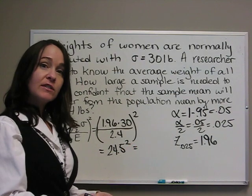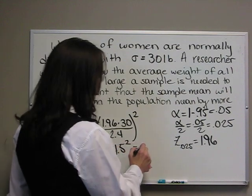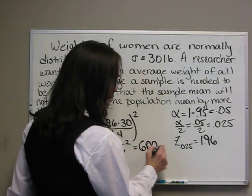gives us 24.5. We still have to square that. Remember that's 24.5 times 24.5. When we square that, we get 600.25.